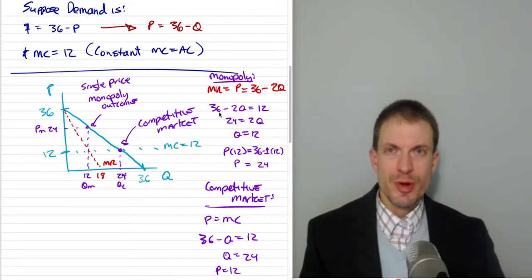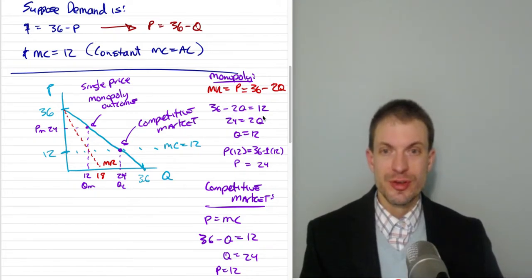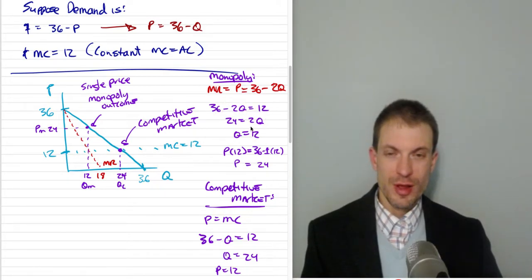The monopoly wants to produce the quantity where marginal revenue equals marginal cost. Here's marginal revenue, set this equal to marginal cost, the quantity is 12. Let's evaluate the inverse demand curve at the quantity of 12 and find we'll sell at a price of 24.